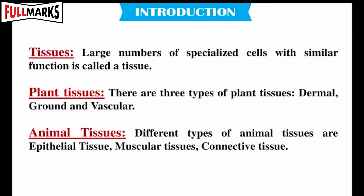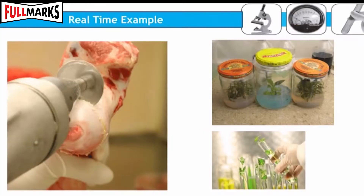Different types of animal tissues are epithelial tissue, muscular tissues, and connective tissue. This experiment will help us study plant tissues and their components like parenchyma, colenchyma, sclerenchyma, xylem, and phloem.